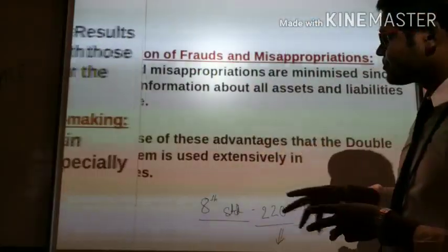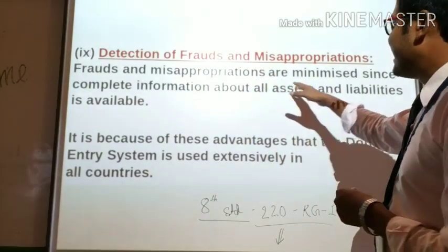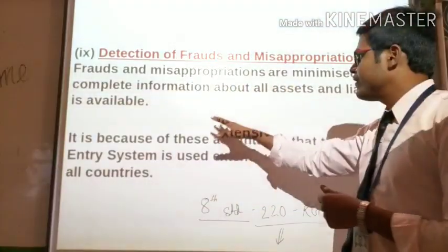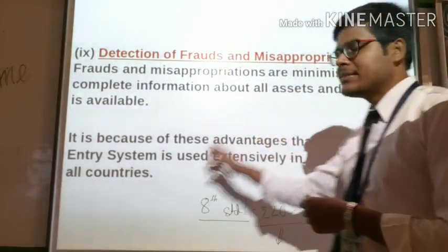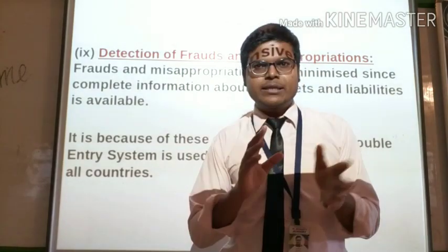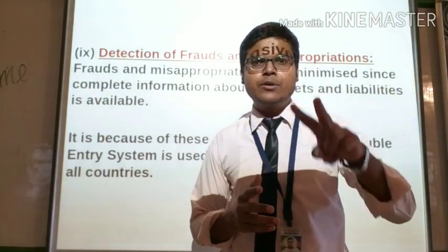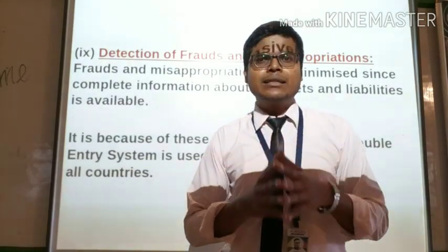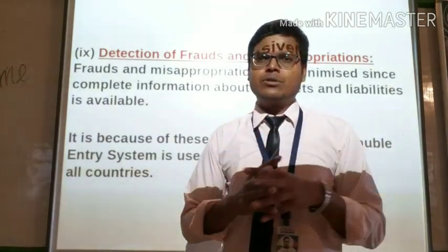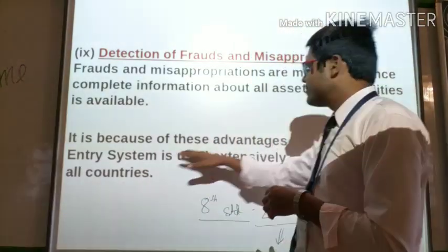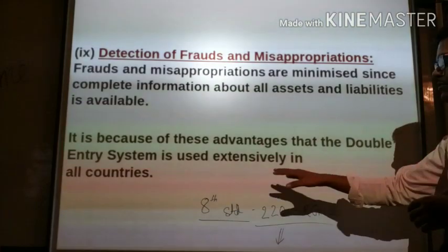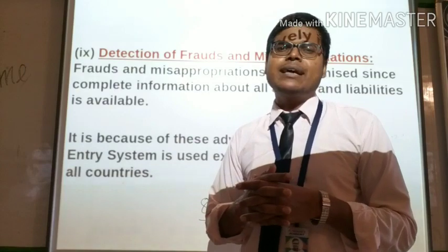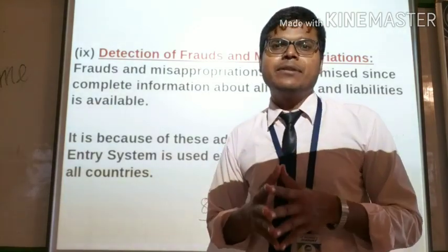Next is detection of frauds and misappropriations. Frauds and misappropriations are minimized since complete information about all assets and liabilities is available. We can do this because we maintain dual aspects — debit and credit. It is because of these advantages that the double entry system is used extensively in all countries, as it is very reliable and accurate.